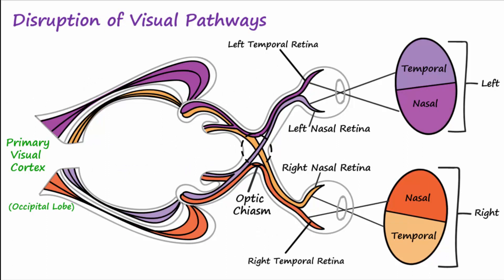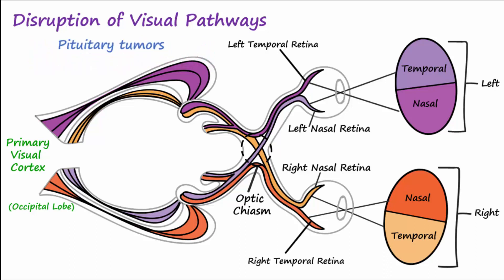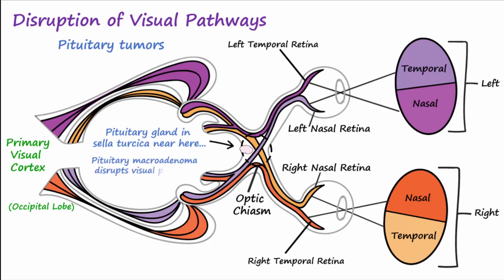Visual information may be disrupted as it travels along these pathways by pathological conditions such as trauma, tumors, and vascular lesions. An important example is pituitary tumors. The pituitary gland sits in the sella turcica, which is very near the optic chiasm. An enlarging pituitary tumor, called a macroadenoma, can disrupt visual information, especially information coming from the nasal retina, which crosses over at the chiasm.